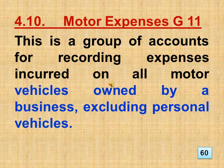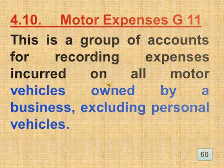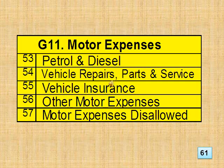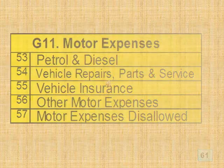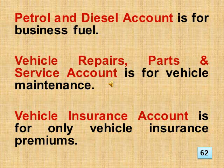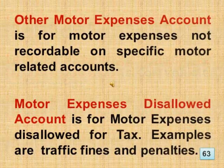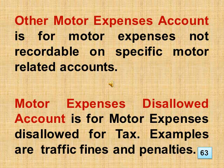Section 4.10 Motor Expenses, Group 11. This is a group of accounts for recording expenses incurred on all motor vehicles owned by a business, excluding personal vehicles. Motor expense accounts include petrol and diesel, vehicle maintenance, vehicle insurance, other vehicle expenses, plus motor expenses disallowed. Petrol and diesel account is for business fuel. Vehicle repairs, parts and service account is for vehicle maintenance. Vehicle insurance account is for vehicle insurance premiums only. Other motor expenses account covers motor expenses not recordable on specific accounts. Motor expenses disallowed account covers motor expenses disallowed for tax — examples are traffic fines and penalties.